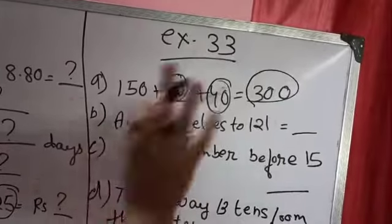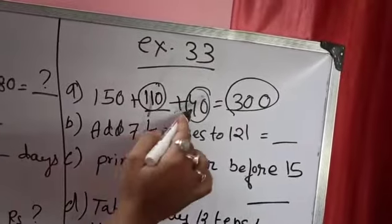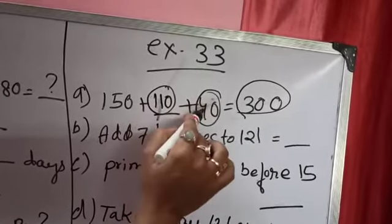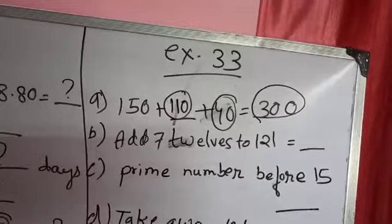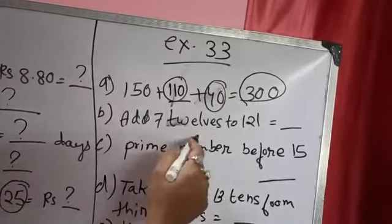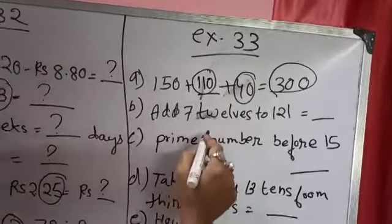We know 150 and 150 is 300. So here 40 is already given to you. Now you have to make this 150. 40 is given to you and 110 makes it 150. So both 150s makes 300. Add 7 × 12 to 121. 7 × 12 means 7 into 12 plus 121. Whatever the answer comes you will write it over here.